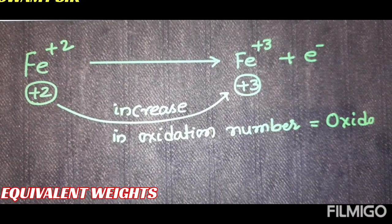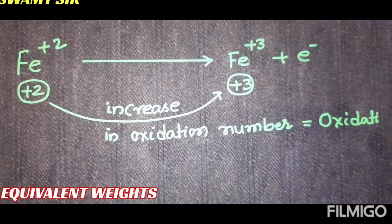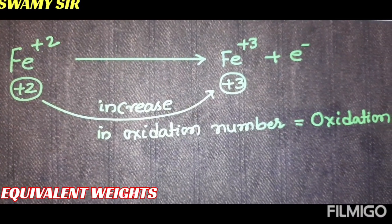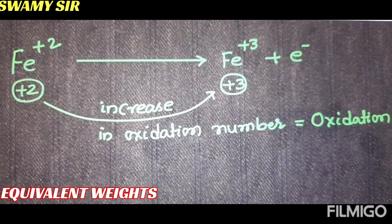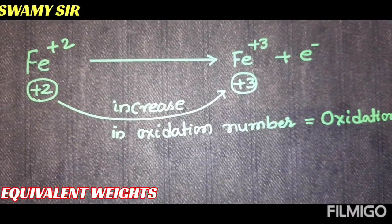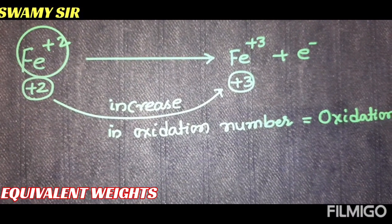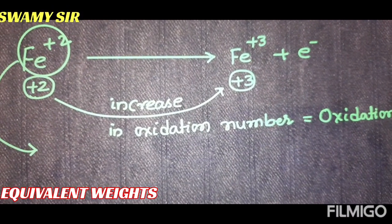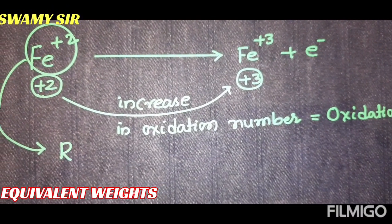The species which undergoes oxidation is called reducing agent. In this example, Fe²⁺ is the reducing agent.